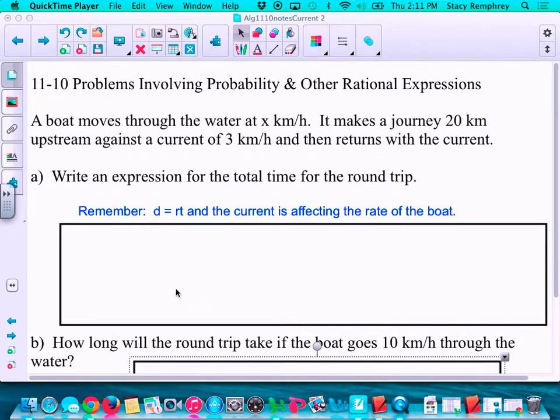Alright, these are the notes for 11-10. We do two different types of problems at 11-10. These are going to be similar to the ones we did before but I've changed the information I gave you. So we have a boat moves through the water at x kilometers per hour. It makes the journey 20 kilometers upstream against a current of 3 and then returns with the current.